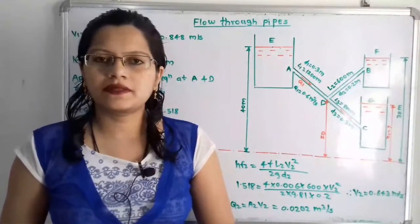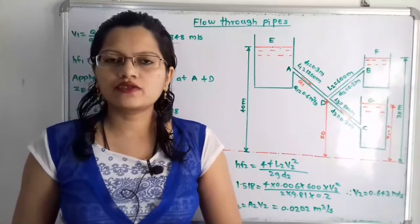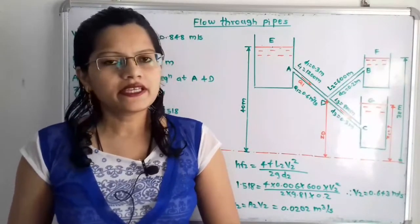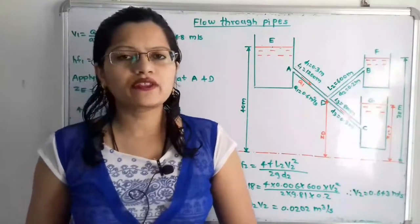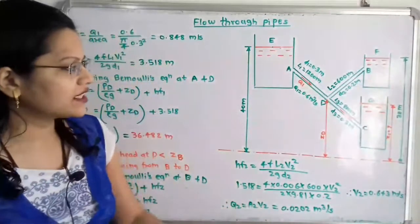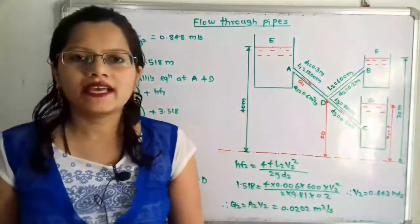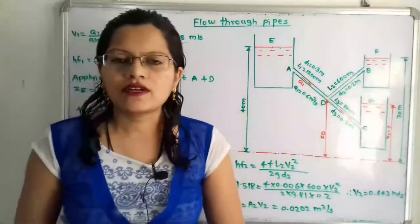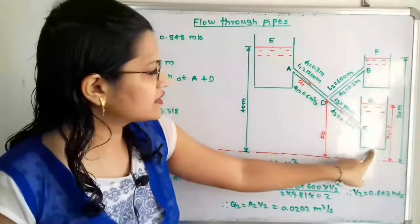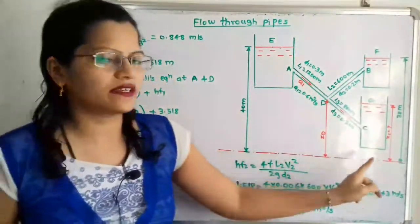Hello friends, this is Priyanka. Today we are going to solve a problem on flow through pipes. In this video, we are going to find out what is the discharge in reservoirs B and C, as well as what is the height of the water level in reservoir C from the datum line.